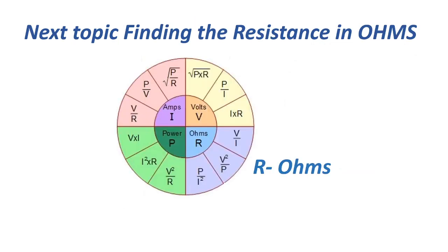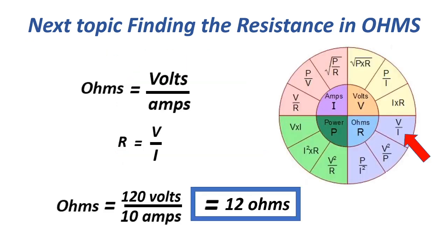The next topic is finding the resistance in ohms. Ohms equals volts over amperes, or R equals V over I. Equals 120 volts over 10 amps, equals 12 ohms.